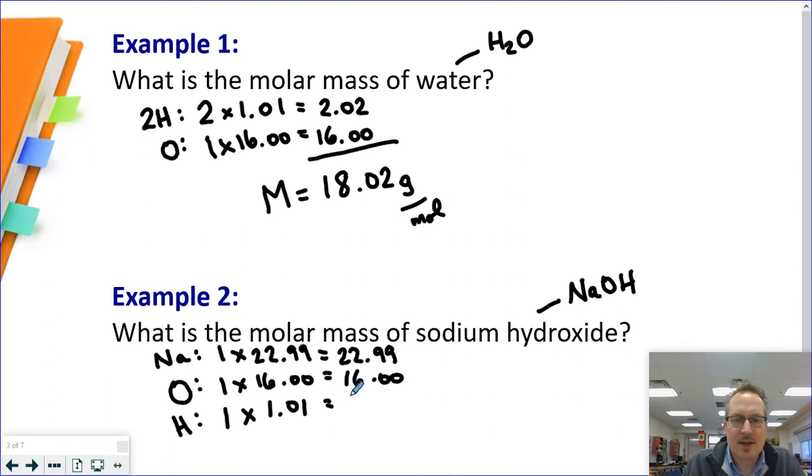The answer is going to be 40 in our calculator. What I want us to remember, though, is that it's actually going to be 40.00 grams per mole. Because if you think about it, this is adding and subtracting rules for significant digits.